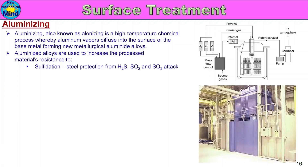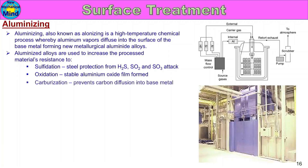Applications of aluminizing include: sulfidation — protection from hydrogen sulfide, sulfur dioxide, and sulfur trioxide attack; oxidation — a stable aluminum oxide film is formed; and carburization — prevents carbon infusion into the base metal.